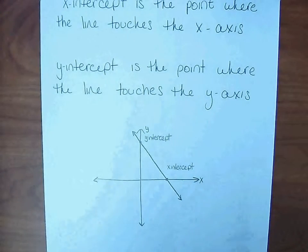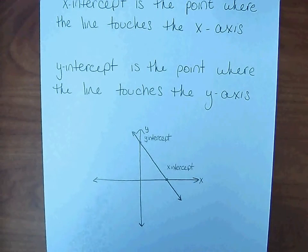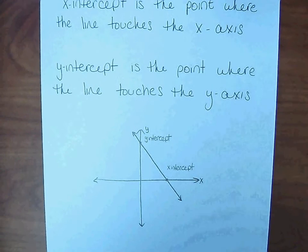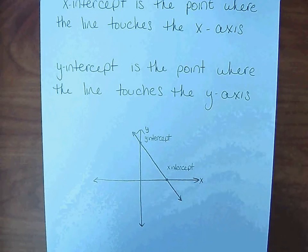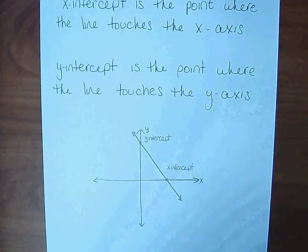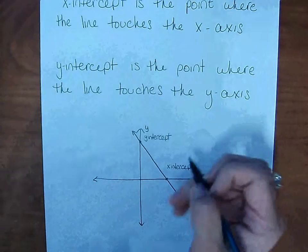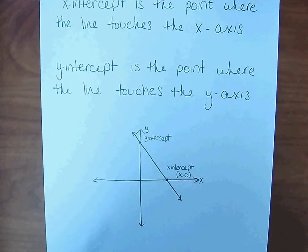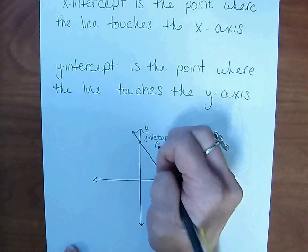No matter where the intercept is along the x or y-axis, each intercept is always in the same form. We'll start with the x-intercept. If you are on the x-axis, that means that you went somewhere left or right, but you did not go up or down anywhere on y. So x-intercepts are always in the form x,0. For the y-intercept, you did not go anywhere left or right, but you went up or down on the y-axis. So y-intercept is in the form 0,y.